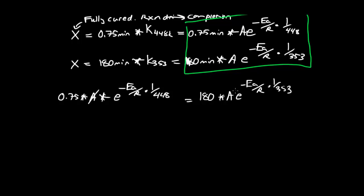The A's cancel out. We have, let's do some rearranging. We have e to the, I'm going to say e plus Ea over R times minus 1 over 448 plus 1 over 353. I'm going kind of fast, but you can double check the math if you like.